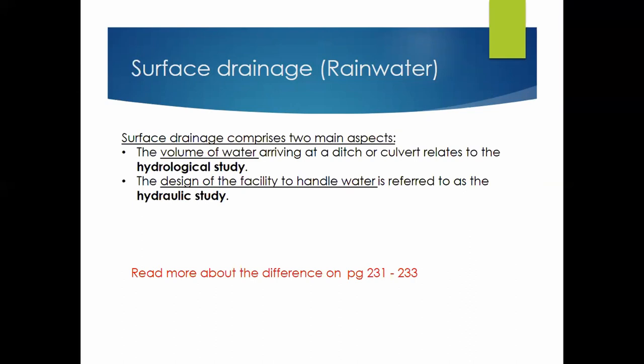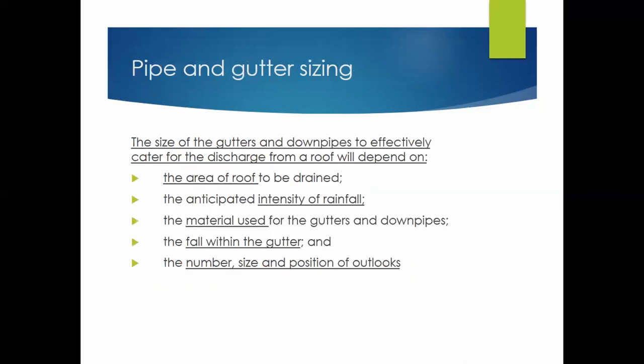Surface drainage is comprised of two aspects: the hydrological study — the study of the volume of water that will be in your catchment area — and the hydraulic study — the forces that your pipe will need to handle. The size of gutters and downpipes to effectively cater for discharge from a roof depends on the area of the roof, the intensity of rainfall, the material used, the fall within the gutter, and the number, size and position of the outlets.